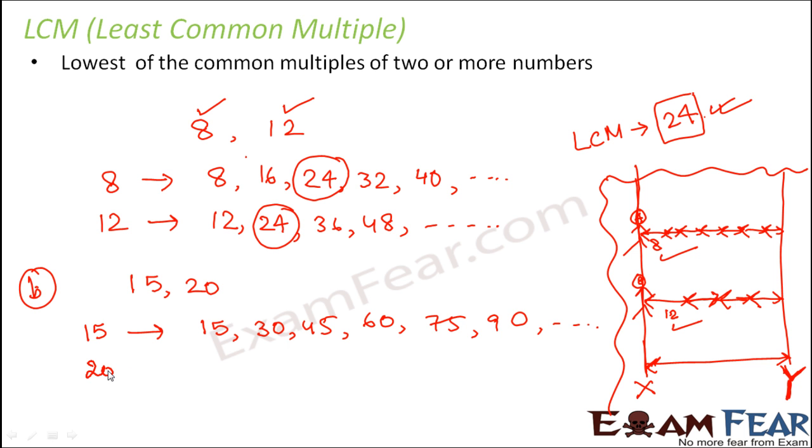Similarly, for 20 the multiples would be 20, 40, 60, 80, 100 and so on. Here what are the common multiples? The first common multiple that you encounter is 60, which is present in both of them. And this is definitely going to be the least common multiple. You might encounter more common multiples later, but their values would be more than 60. So the least common multiple of 15 and 20 would be 60.